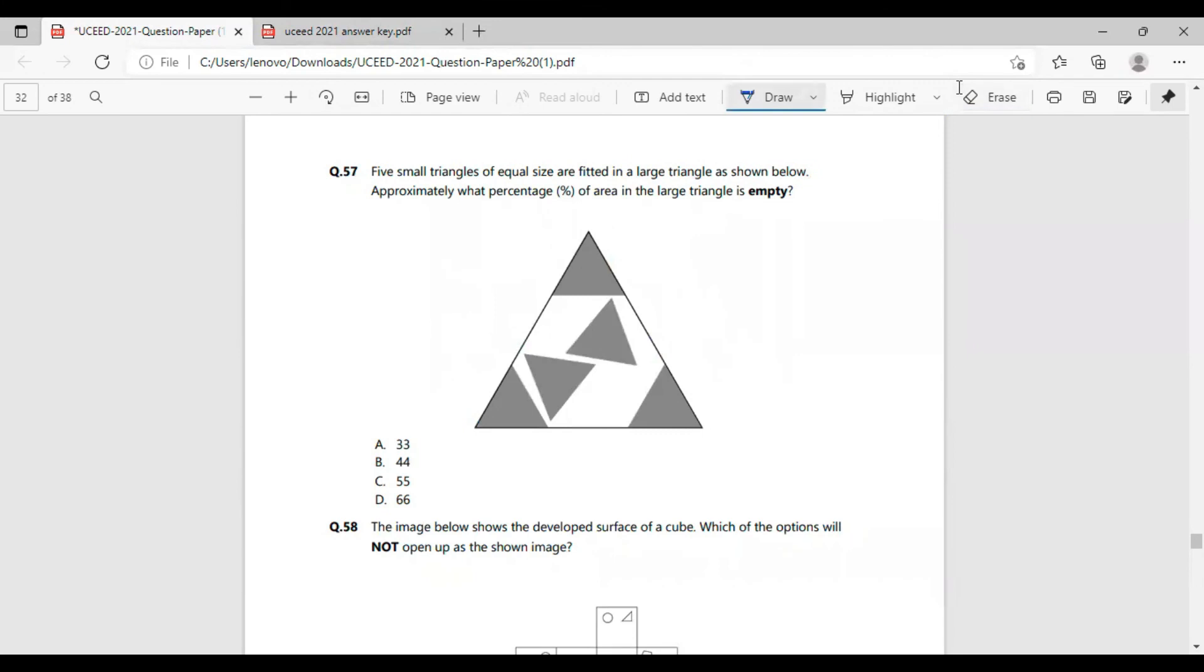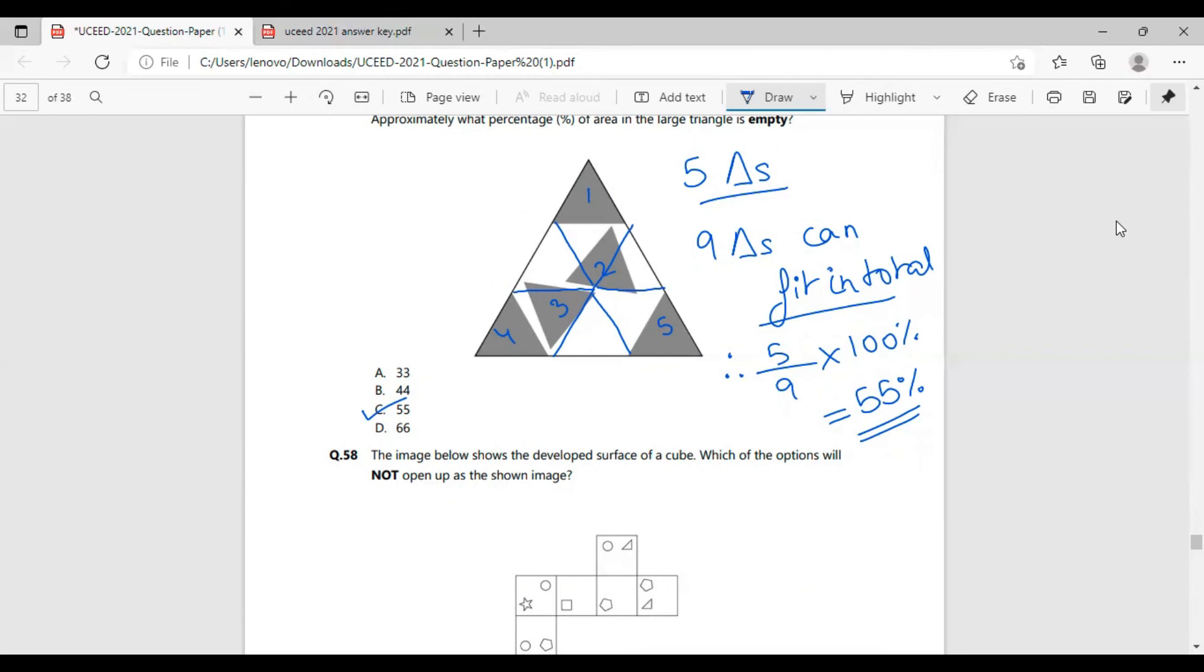In this question, we have to decipher what percentage of the whole area of the bigger triangle is covered by the smaller grayish triangles. In order to calculate that, I calculated how many number of triangles can fit in this big triangle. Currently, there are five triangles here.